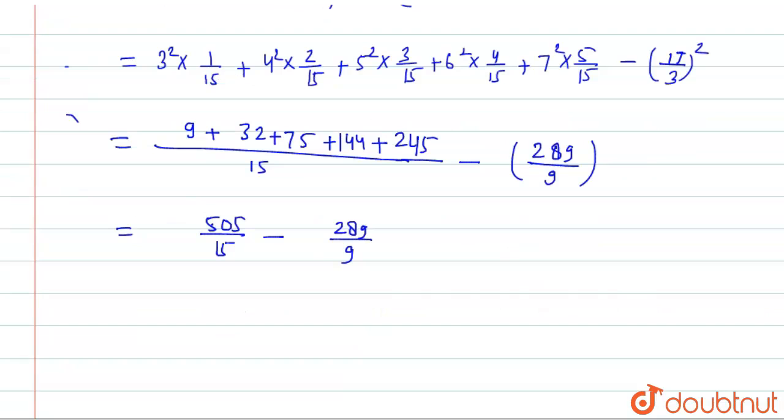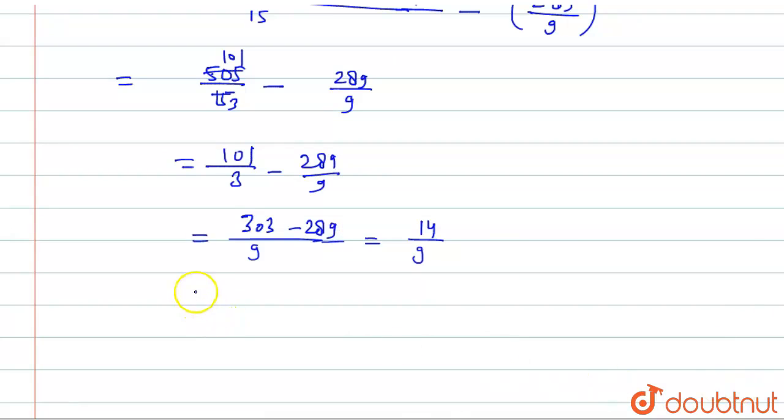Now we will take LCM 15. This is 9 plus 32 plus 75 plus 144 plus 245 minus 289 by 9. This is equal to total 505 by 15 minus 289 by 9. We will divide by 5, this is 101 by 3 minus 289 by 9. Now we will take 9 as LCM, this is 303 minus 289, which equals 14 by 9. This is the value of variance.